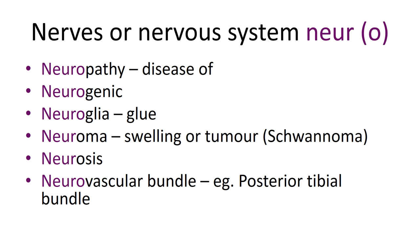Neuropathy — 'pathy' means disease of — so neuropathy is disease of a nerve or disease of the nervous system. For example, peripheral neuropathy can occur in diabetes, vitamin B deficiency, or alcohol abuse. If there is a peripheral neuropathy, there is disease of the peripheral nerves. The term neuropathy just means disease of, or disease related to, nerves or the nervous system.